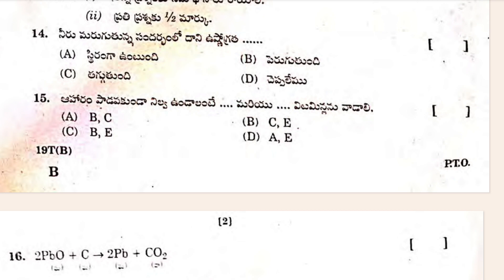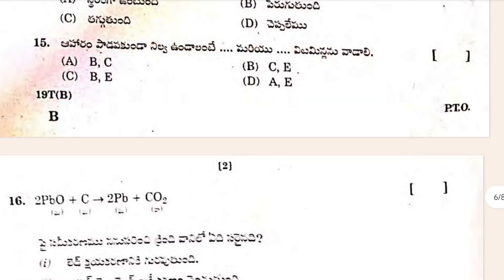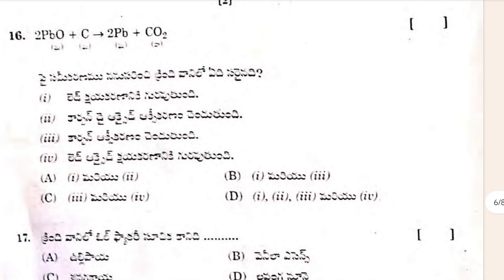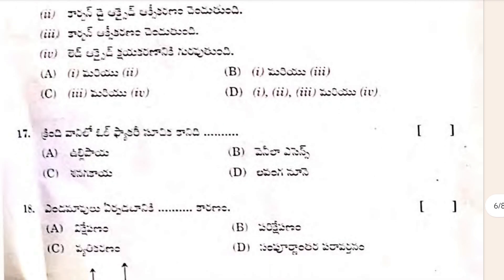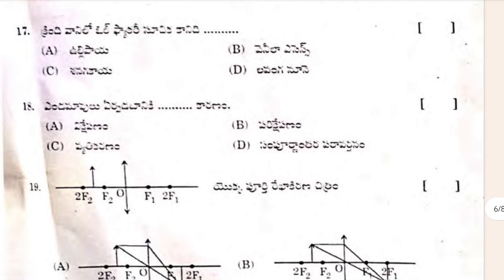This is a 10-mark section — you have to attempt 20 questions. If you attend one question you will get half a mark; if you attend two questions you will get one mark. So you have to attend 20 questions to get 10 marks. Make sure you do everything correctly.